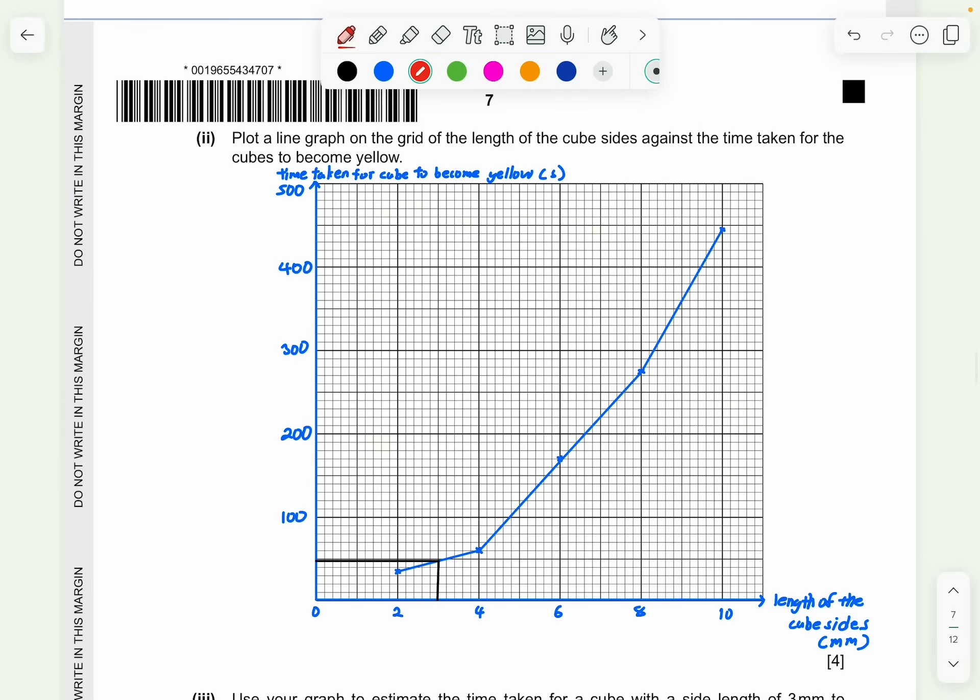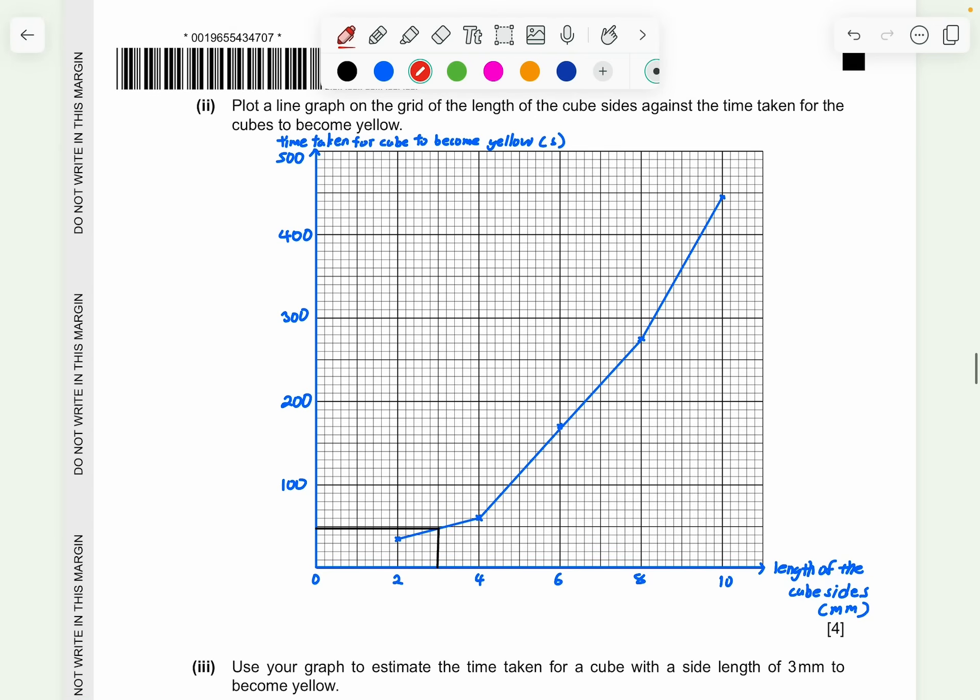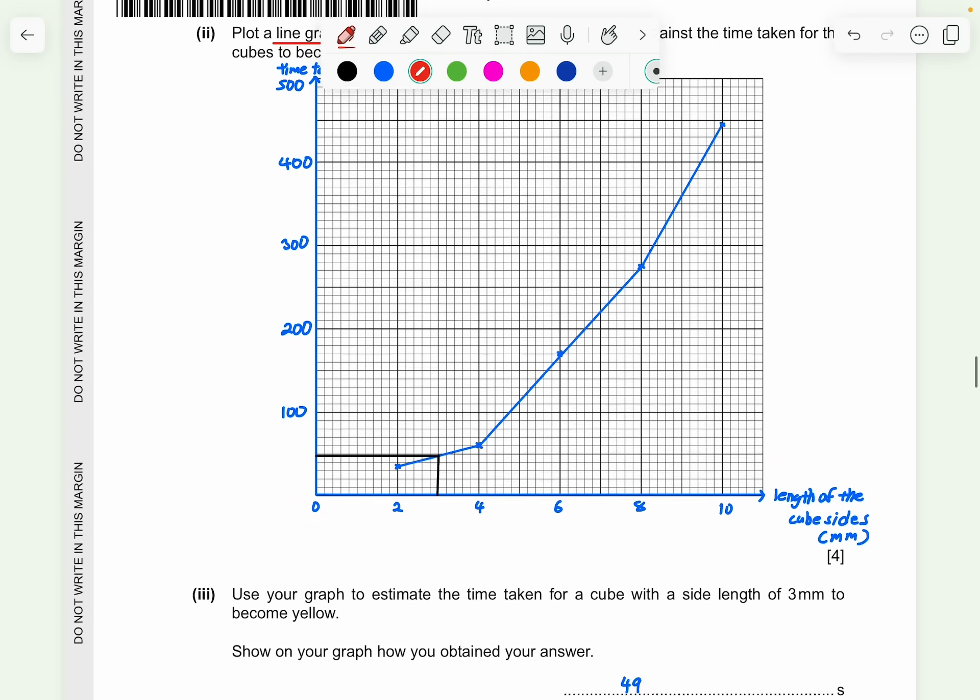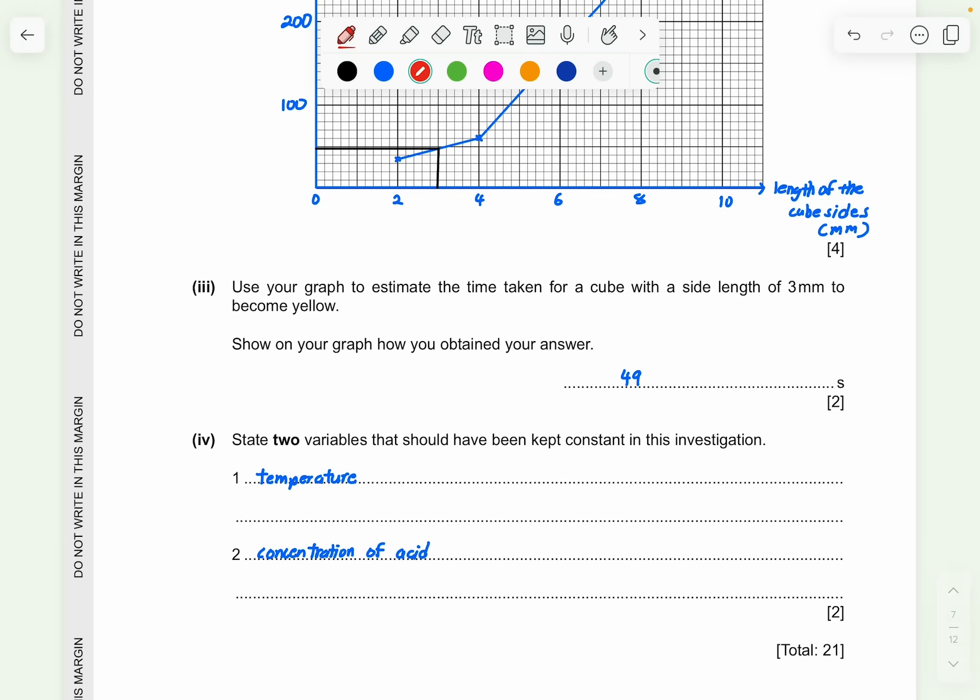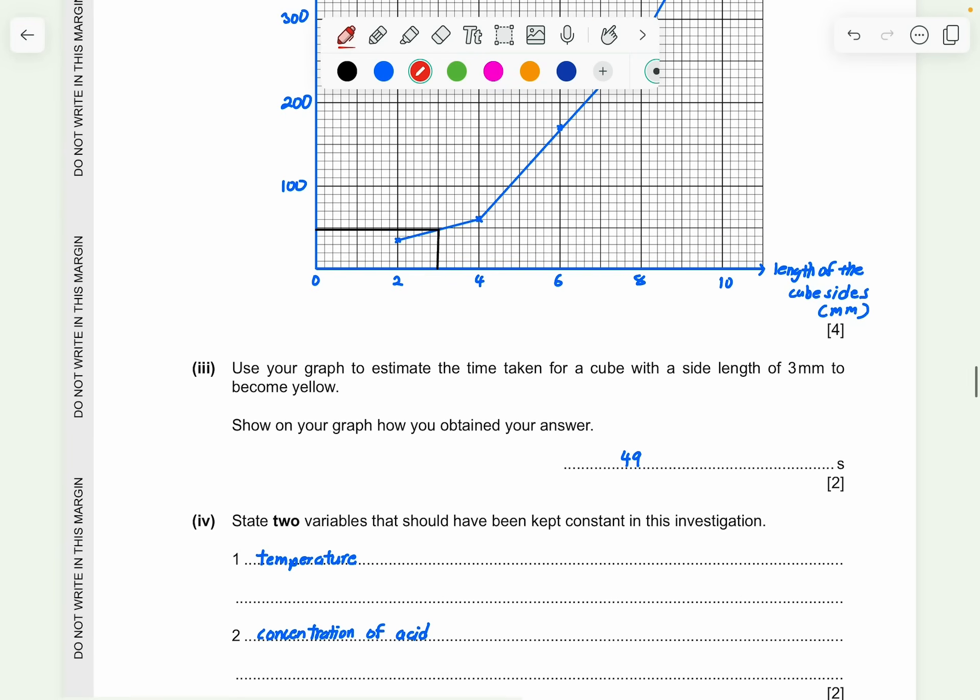Now, they're asked to plot a line graph on the grid of the length of the cube size against the time taken for the cubes to become yellow. So you can plot this graph out and the line. How is it going to look like? For this graph, it can also be drawn in either this line graph by connecting the dots by a straight line like that, like the one that I've drawn here because it says it's a line graph. And if it's a, this of course looks like a curved graph. At first, it does look like the shape of a curved graph, but the question says it wants a line graph. So you just plot as it is. So part 3, use your graph to estimate the time taken for a cube with a side of length 3 mm to become yellow. Show on your graph how you obtain your answer. So here is the black line that I've indicated here. So it's about 49 seconds.